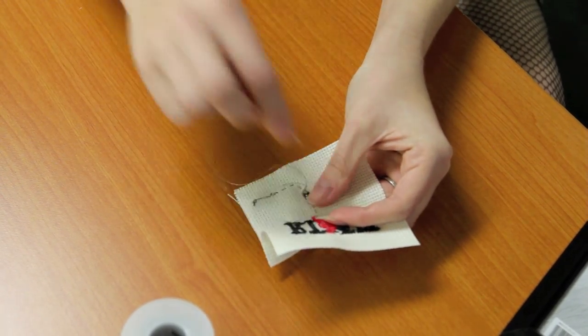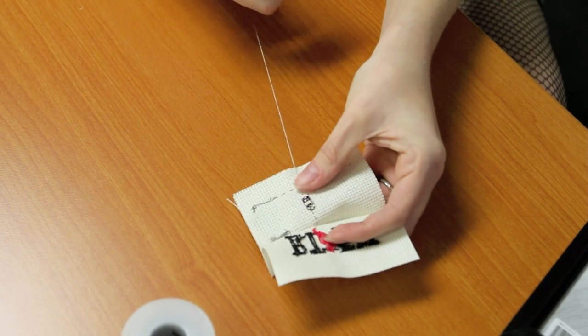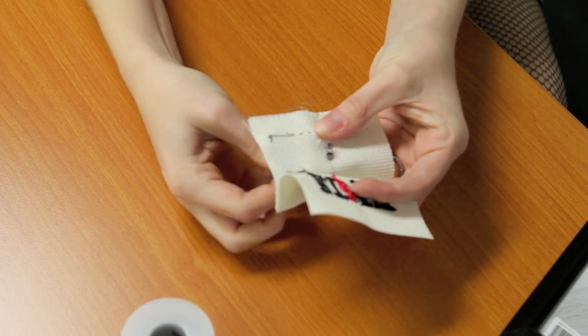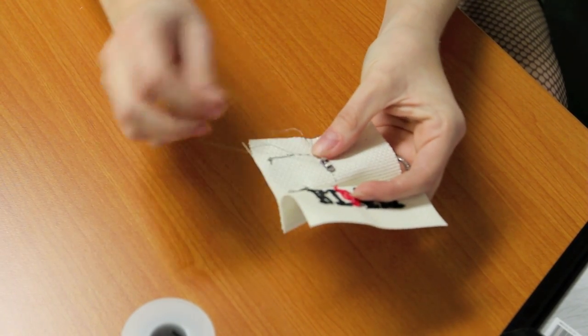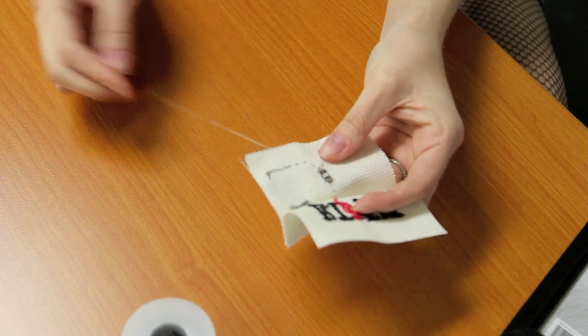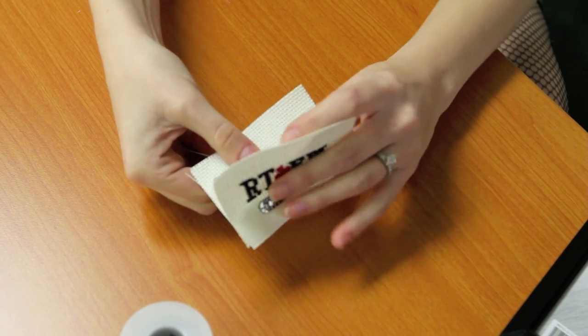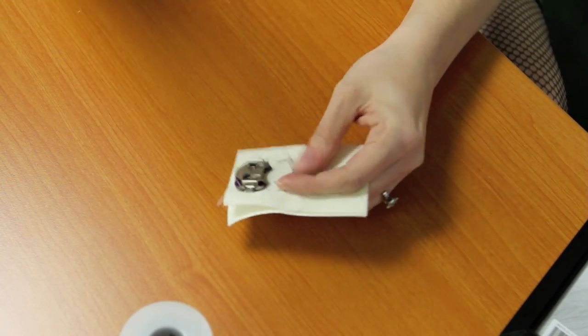Now I'm just going to add a few stitches, connecting the negative side of the LED to the fabric, and through the thread to the battery holder. This completes the circuit, so we can tie off and cut our thread.